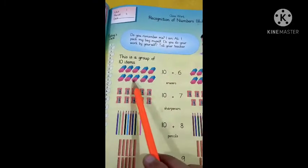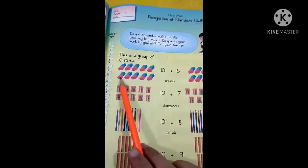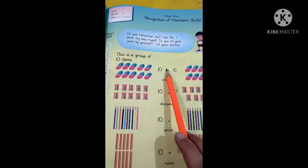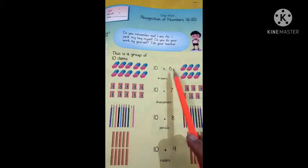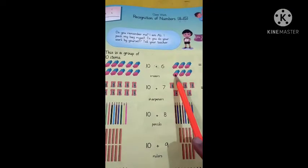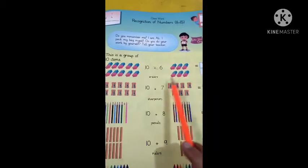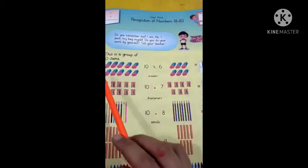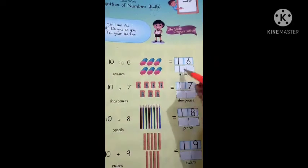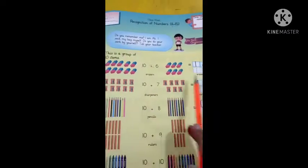This is a group of ten items. Look at the erasers. There are one, two, three, four, five, six, seven, eight, nine, ten. We will add six more erasers: eleven, twelve, thirteen, fourteen, fifteen, sixteen. They will become sixteen. We will write one and six — sixteen here. There are sixteen erasers.